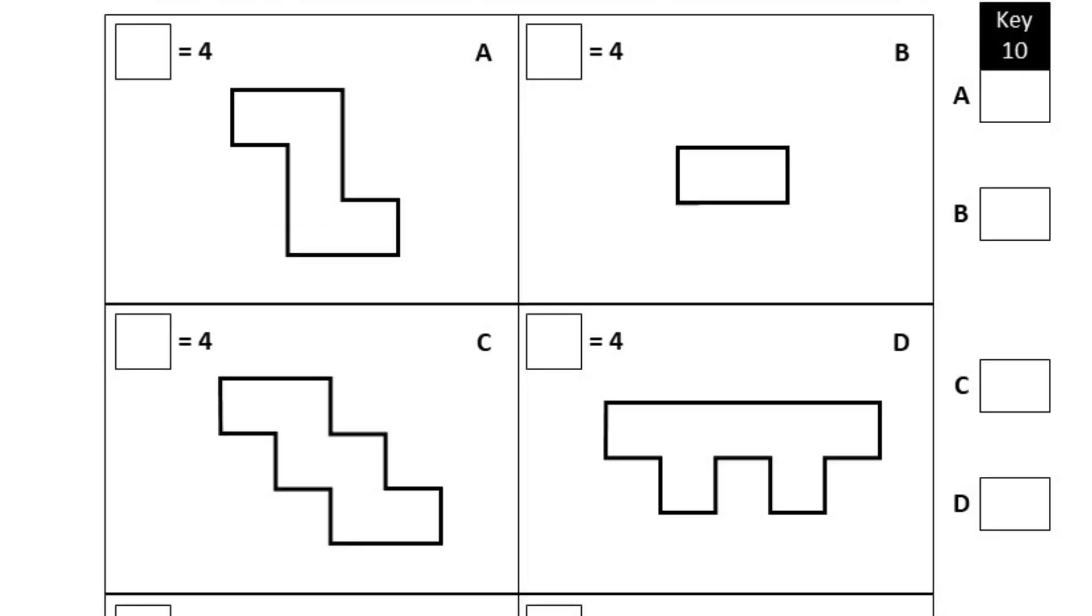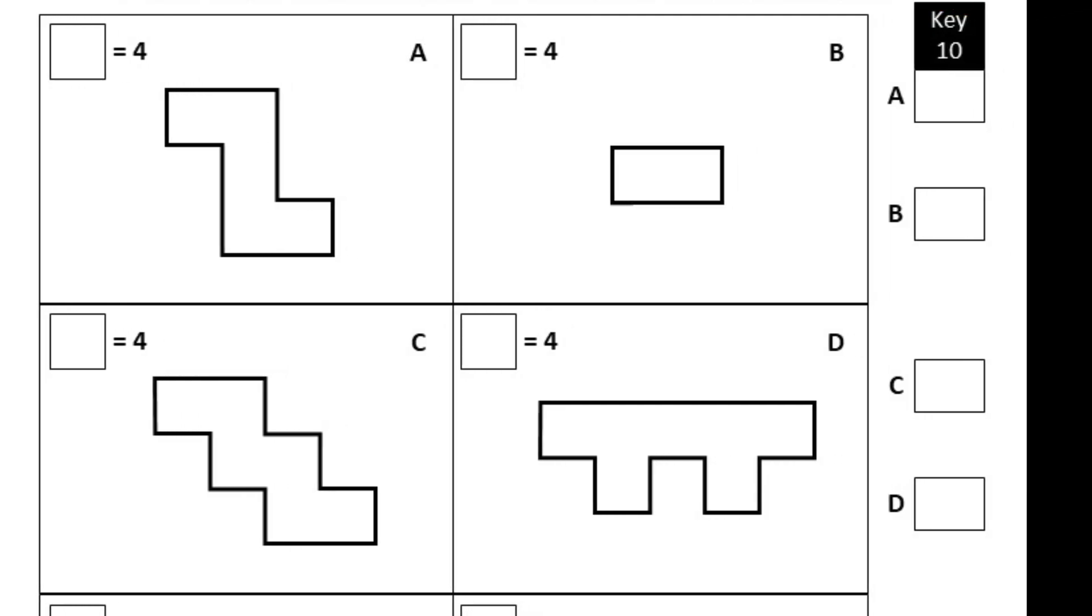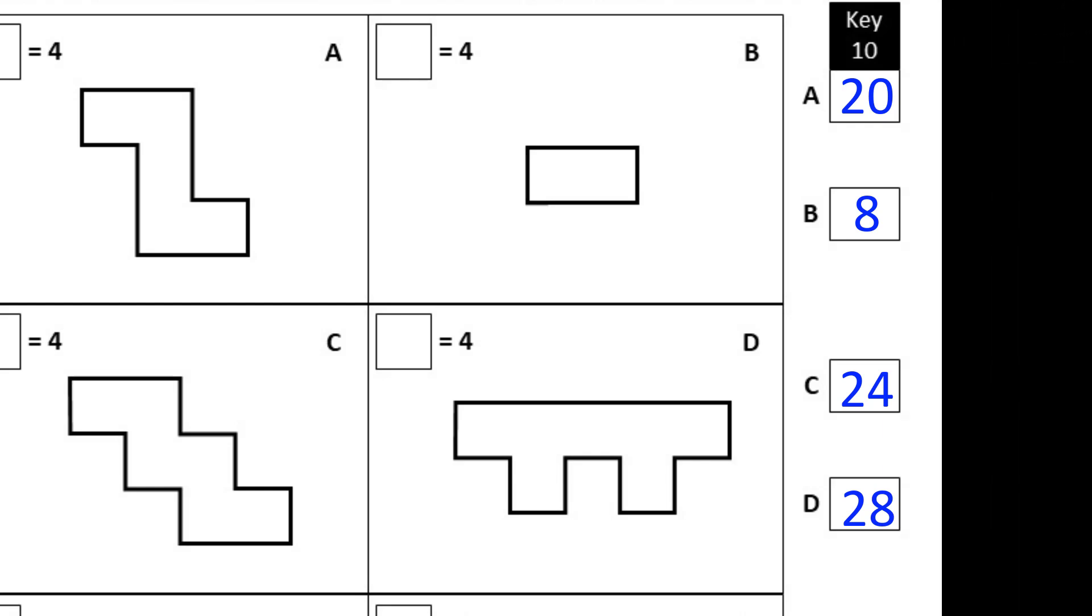That brings us to tip number 5: have students use the answer key. The pages are marked clearly, so it's very easy to find the keys. When students have completed the page, they simply slide the answer key next to their answers to check if they are correct. The answer key provides immediate feedback regarding whether the answer is correct. But most importantly, it lets the students know that their thinking about multiplication is effective.